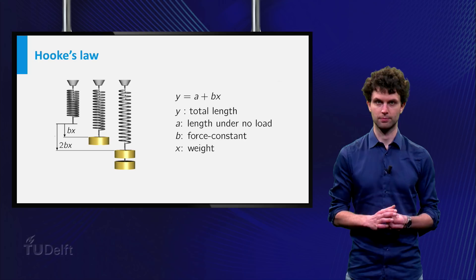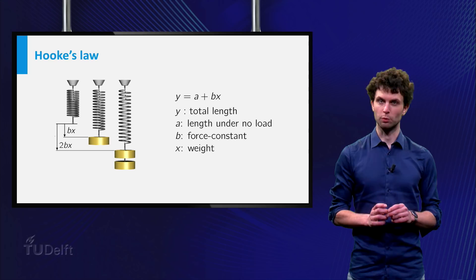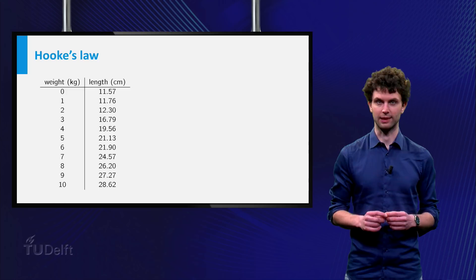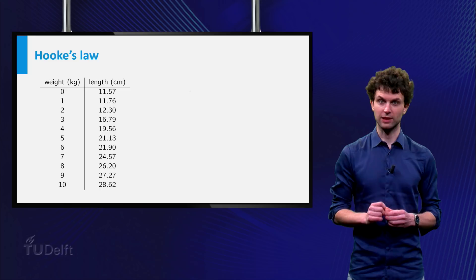We would like to find the values of a and b, and you will discover how to do this using data fitting. Suppose you measure the stretch of the spring for 10 different weights, and you also measure the spring without any weight. Be careful! Due to measurement errors, this latter measurement is usually not equal to the constant a.